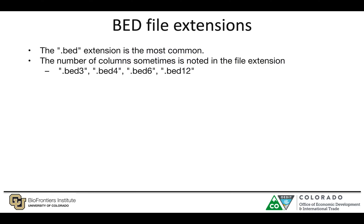As far as file extensions for a BED file go, they're simply encoded by a .bed extension, or depending on how many columns are included in that particular BED file. It could be a bed3 format where three columns are included, or bed12 where all 12 columns are included. The main reason a BED file is attractive for use with bedtools is its simplicity in just giving you the start, the stop, and the chromosome.